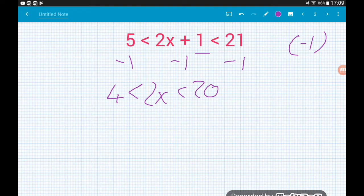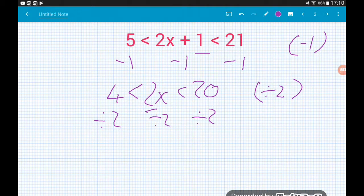And now all we need to do is get rid of that 2 on the x. So to do that, we divide by 2, and again, we do that to each of the three parts of the inequality. Usually the golden rule with algebra is we have to do the same on both sides. When we're dealing with these inequalities, we have to do the same thing to all of the three parts.